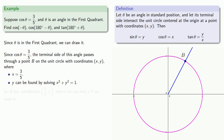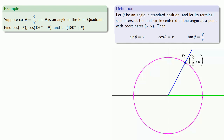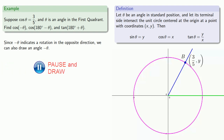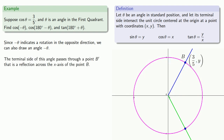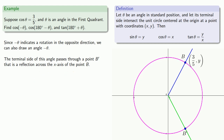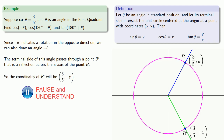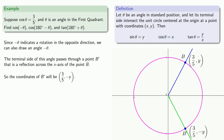So P has coordinates (3/5, y). Since -θ indicates a rotation in the opposite direction, we can draw an angle -θ. The terminal side of this angle passes through a point B' that is a reflection across the x-axis of the point B. So the coordinates of this point will be (3/5, -y). But our x-value is the cosine, so since B' represents an angle of -θ, we can read this off: cosine of -θ is 3/5.